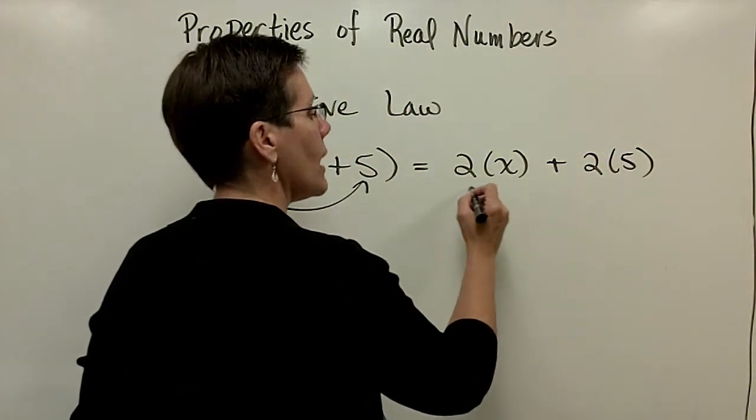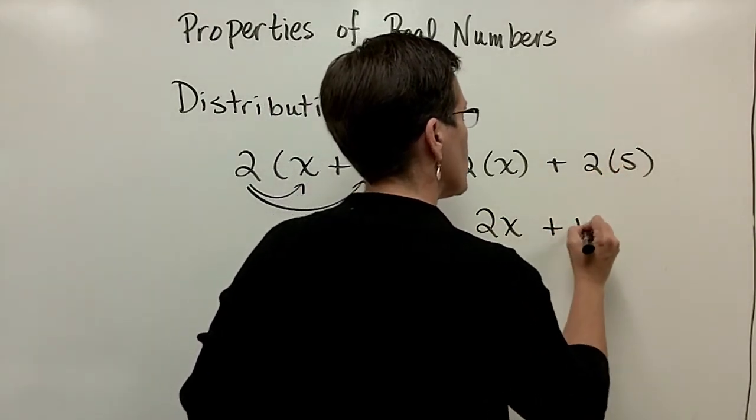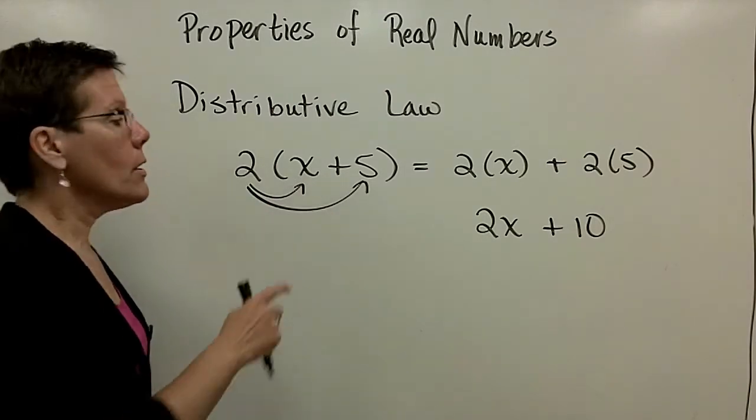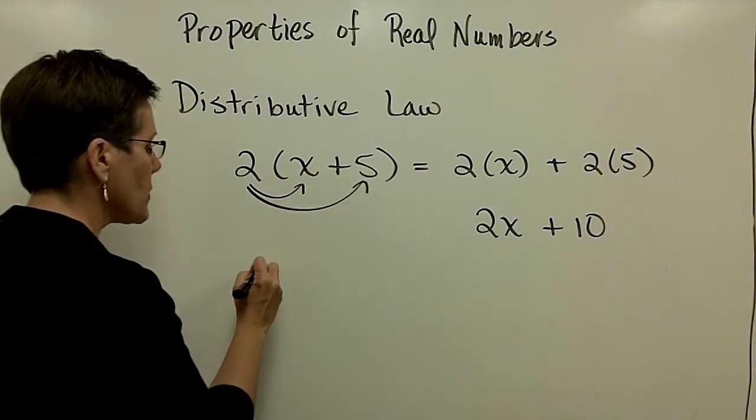And the results will be here, 2 times x is just written as 2x, and 2 times 5 is just written as 10. And I have distributed the 2 through this binomial, as we call it, something with two terms.